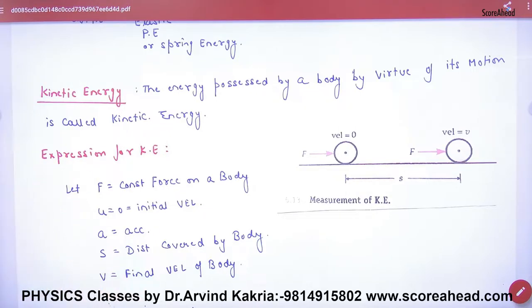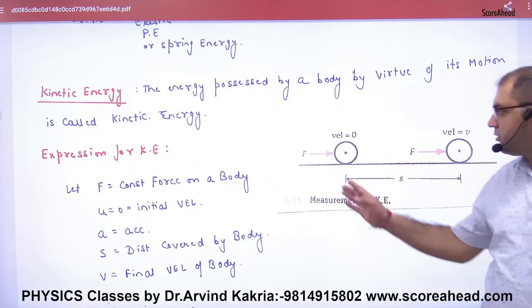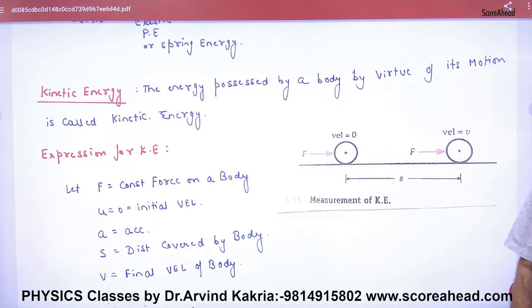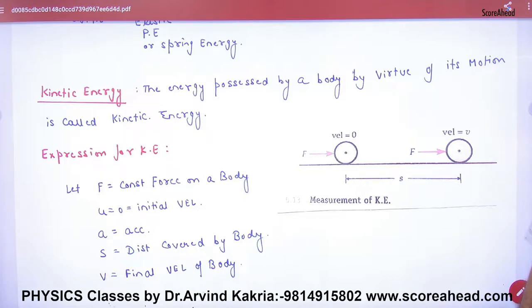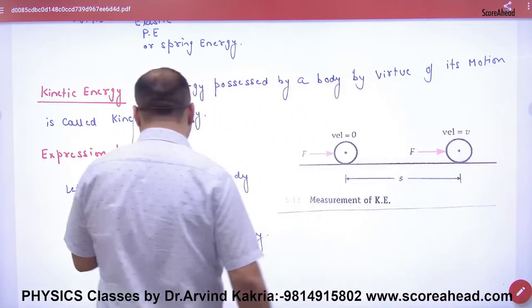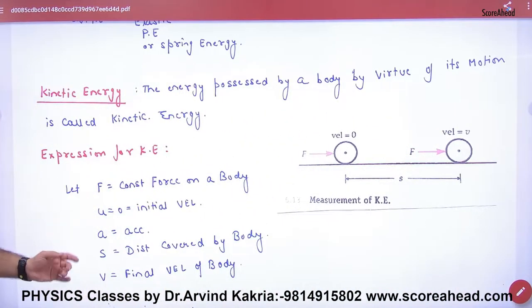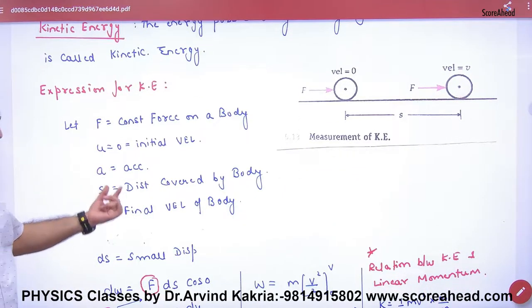Suppose you have a body and it is at rest. You put a force on it, and because of that force, it gains velocity V. The body accelerates because a force is applied, and it undergoes displacement. We apply a constant force — not variable. Initial velocity is zero, acceleration is a, distance is S, and final velocity is V.